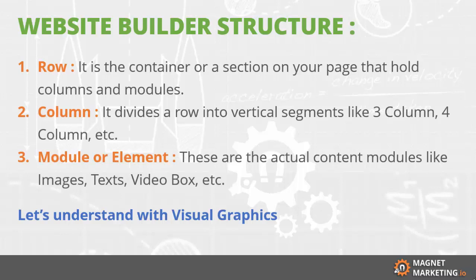Let us discuss what is the structure of our website builder tool. There are mainly three aspects. The first is the row — it is the main container of a particular section on your page. Whether it may be a testimonial section, you need to have a row, and if you want to change from three column to four column, you need a separate row.